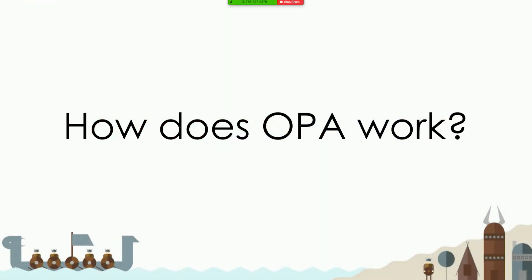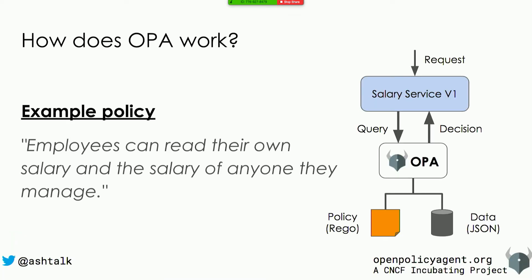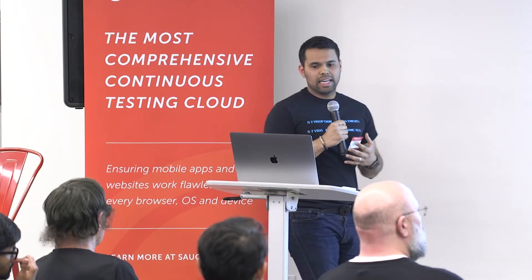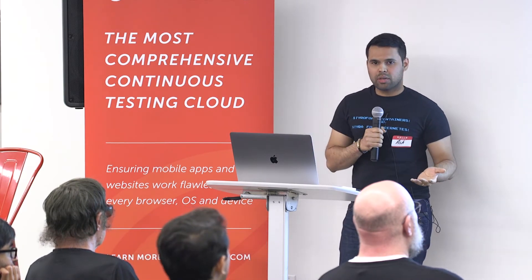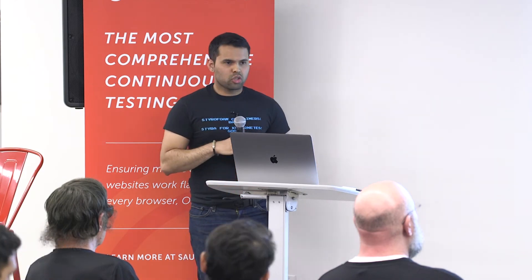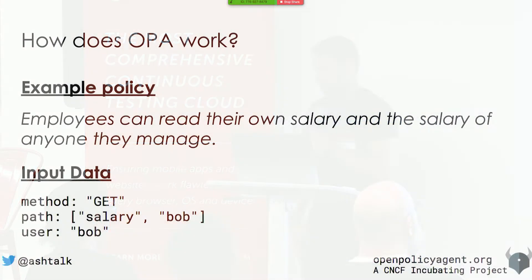So how does OPA actually work? Whenever your service gets a request, it asks OPA for a decision. OPA, based on the policies and data it has access to, provides that decision back to your service where it gets enforced. For example, let's say you have a salary service that provides information about employee salaries.